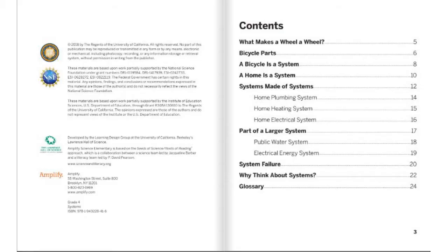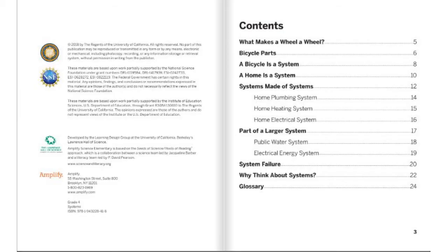After that we'll move on to reading about larger systems. So a public water system or an electrical energy system are both things that we can see on a big scale. The last two things that we're going to learn about is what happens when systems fail and why do we need to learn and know about systems. At the end we have the glossary, which I will read to you just so you can understand a few more words.